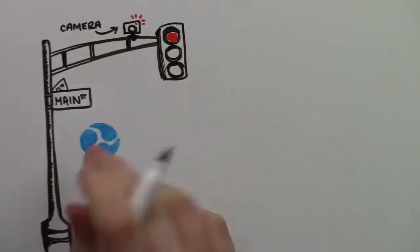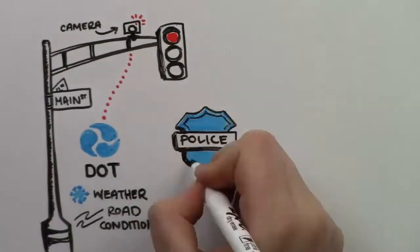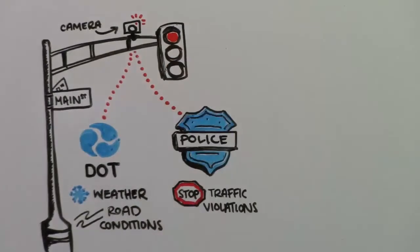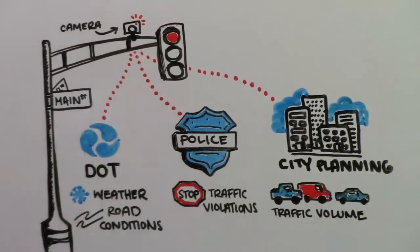The Department of Transportation is monitoring weather and road conditions. The Police Department is watching for traffic violations at the intersection. And the City Planning Department is keeping an eye on traffic volume as they expand a nearby neighborhood.